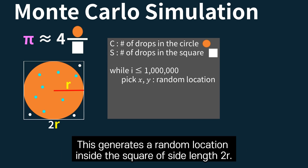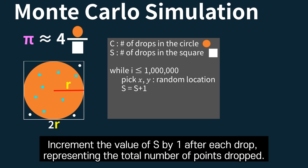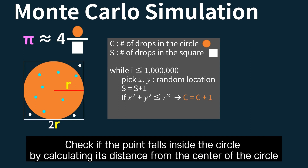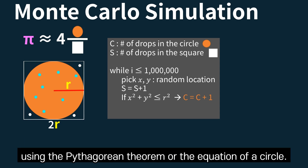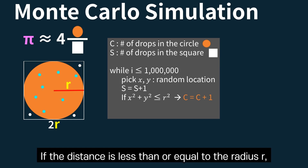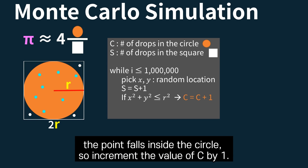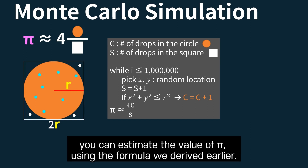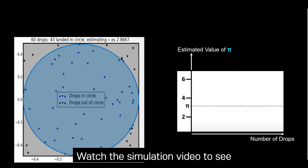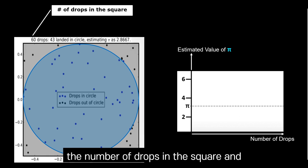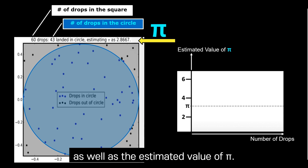This generates a random location inside the square of side length 2r. Increment s by 1 after each drop, representing the total number of points dropped. Check if the point falls inside the circle by calculating its distance from the center using the Pythagorean theorem or the equation of a circle. If the distance is less than or equal to the radius r, the point falls inside the circle, so increment c by 1. After completing all the drops, estimate the value of pi using the formula derived earlier. Watch the simulation video to see the number of drops in the square and in the circle, as well as the estimated value of pi.